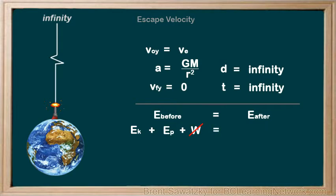Let's consider the E after. Now, after is actually the situation where the object has escaped. That is, it's reached infinity. Its velocity is basically 0. Since the velocity has reached 0, the kinetic energy must be 0. Also, since we're considering potential energy as relative to infinity, the potential energy at infinity would also be 0. So, we're left with 1 half mv squared plus minus GMm over r as the energy before and 0 as the energy after.